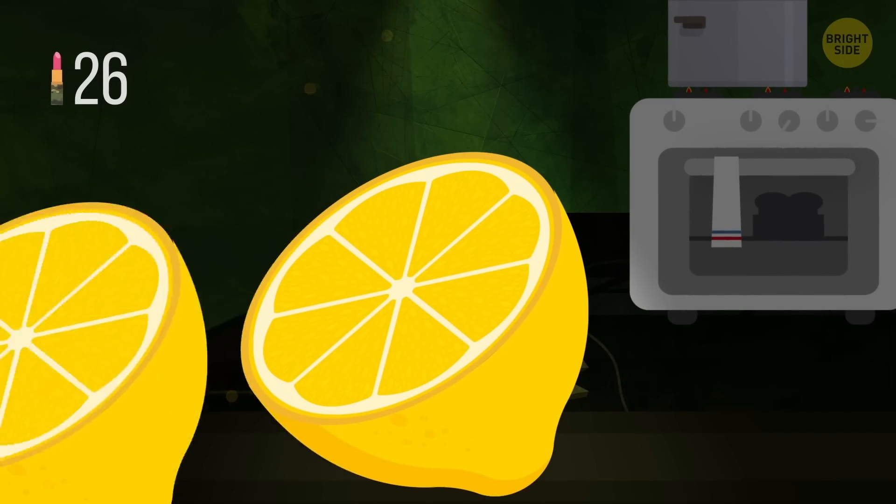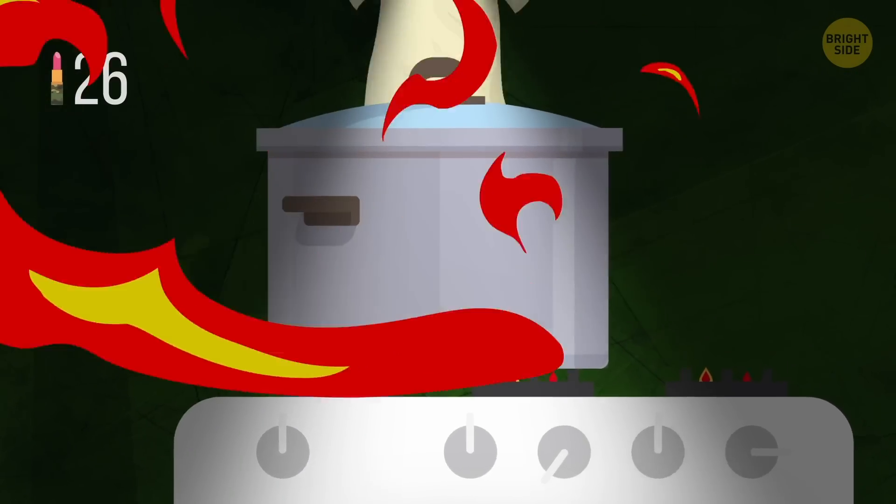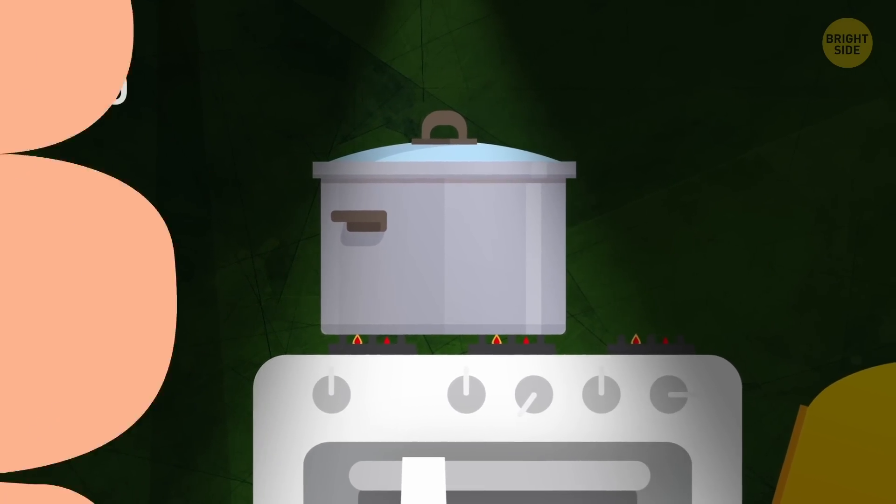Slice a lemon or two and toss the pieces into a pot of water. Boil the water, turn off the heat, and put your white clothing that's become dull into the pot. Leave it to soak for an hour, then wash as usual. However, you should make sure that the particular fabric can withstand the heat.